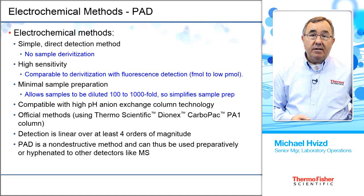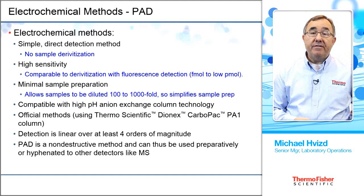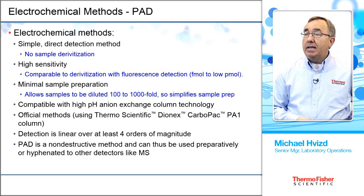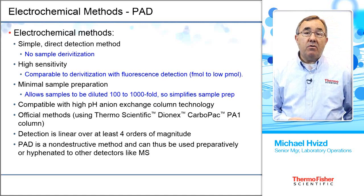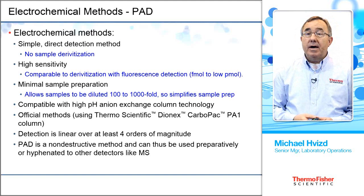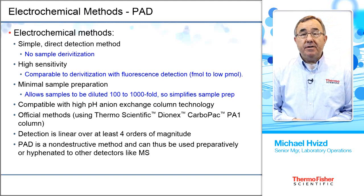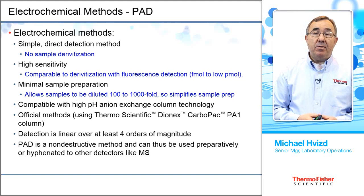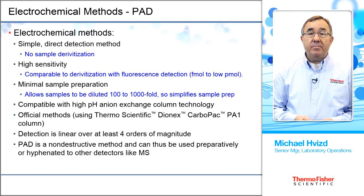We can dilute our samples by a factor of 100 or even 1,000 and still have very good sensitivity with this detector. Most of our methods developed over the years are now official methods in the AOAC or other groups. Detection is linear over four orders of magnitude. Since PAD is a non-destructive technique, we're able to take a fraction of the sample as it comes through our detector and use it in other instrumentation, such as a mass spectrometer.